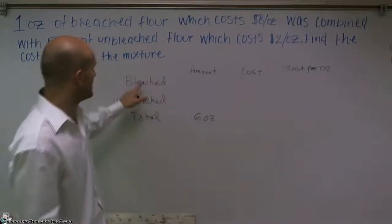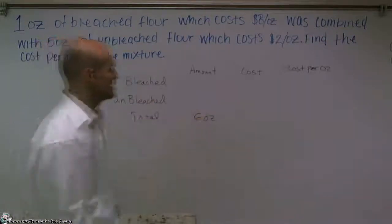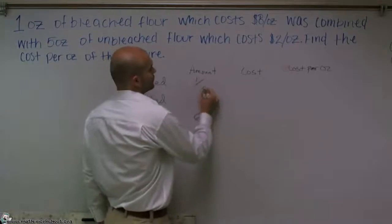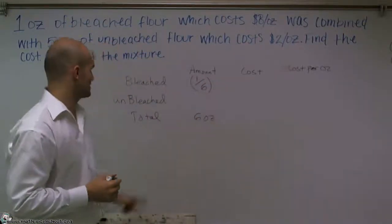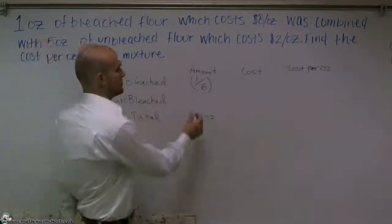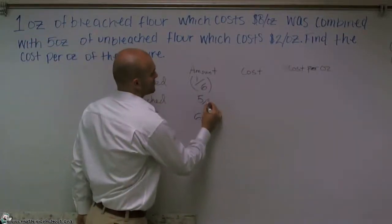So my bleached is just going to be one out of six ounces. So the amount of bleach will be represented as a fraction one-sixth. The amount of unbleached we're going to represent as a fraction as five over six.